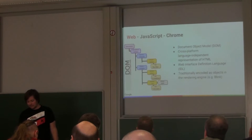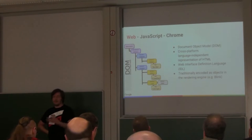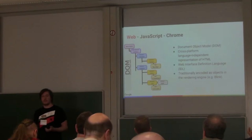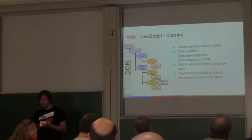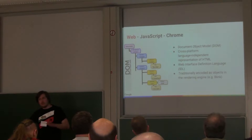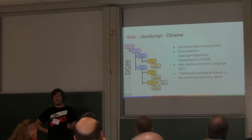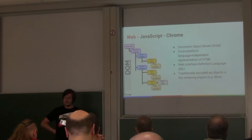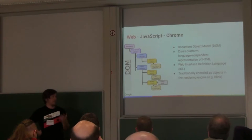The web, JavaScript, and Chrome. The web, as we see it, is actually defined in a specification using WebIDL, and it's called the Document Object Model. It's a cross-platform, language-independent description of what the web is, what HTML is. Traditionally, this is then implemented as concrete objects, usually in the renderer. For Chrome, this is Blink, and Blink is written in C++. So you would have a C++ object for each of those types specified in the WebIDL.